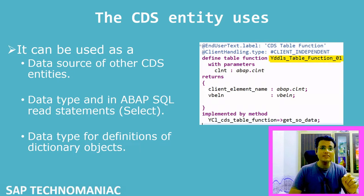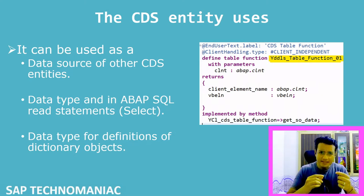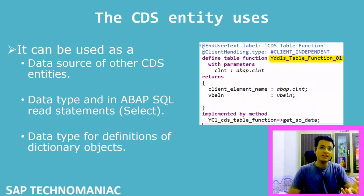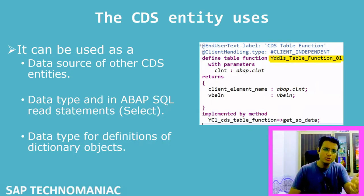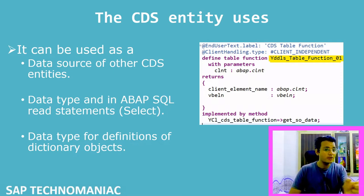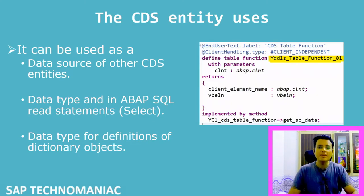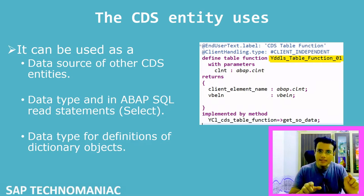One more basic point: where can you use CDS table functions? You can use the CDS entity in a SELECT statement to get data. You can also use it as a data source in another CDS view. Additionally, you can use it for data type declarations — declaring internal tables and work areas. Those are three important use cases. Now let's jump into the system and create a basic CDS table function.